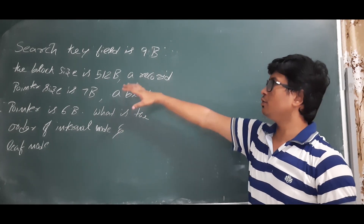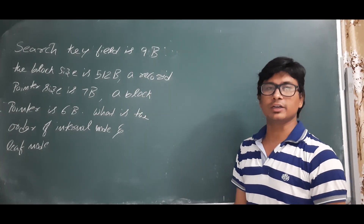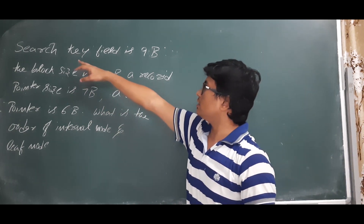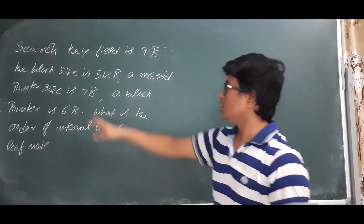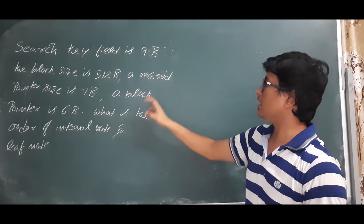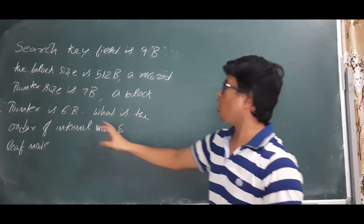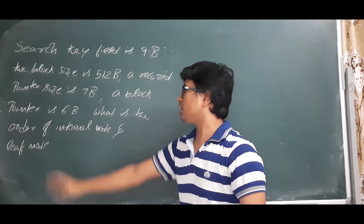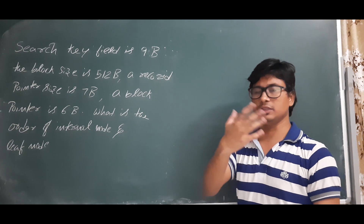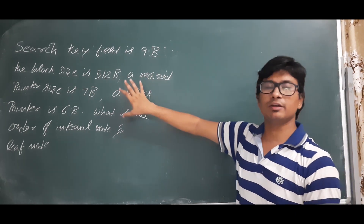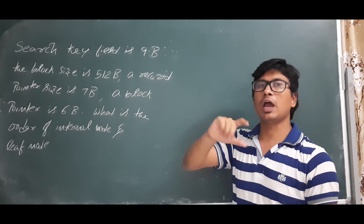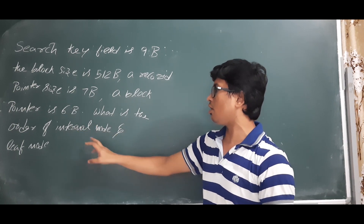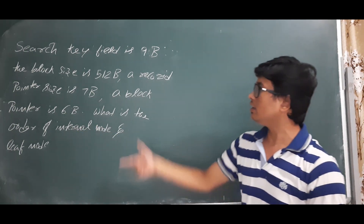Good morning students. In this video we will solve one numerical question related to B+ trees. The question gives us: search key field size is 9 bytes, block size is 512 bytes, record pointer size is 7 bytes, and block pointer size is 6 bytes. We need to find the order of the internal node and the leaf node — this is a B+ tree, so we have two different orders.